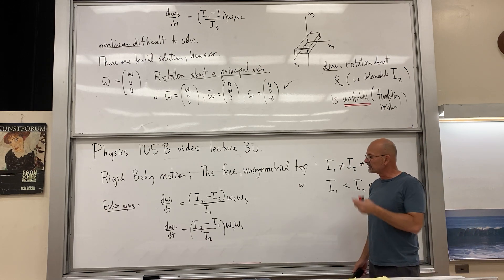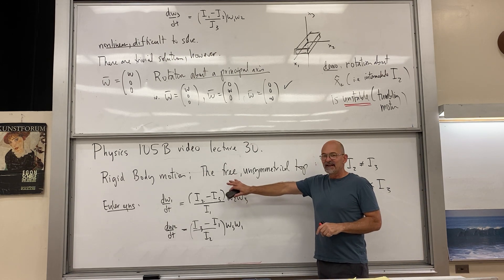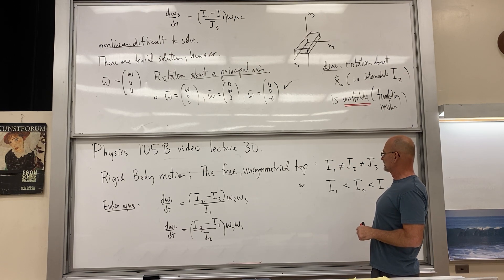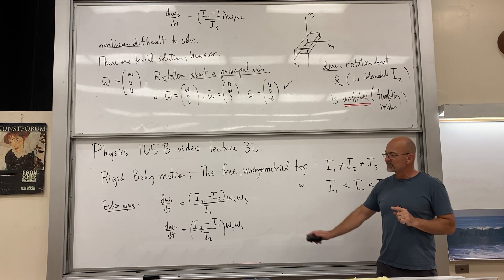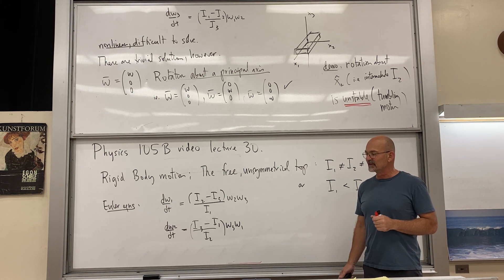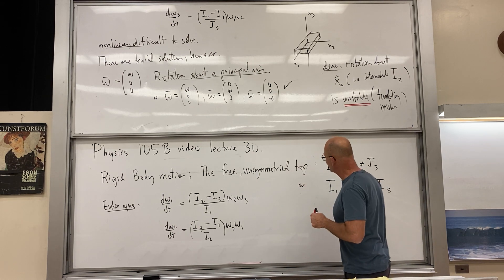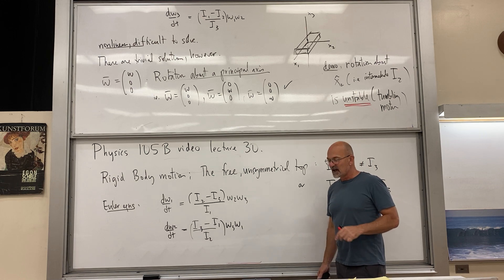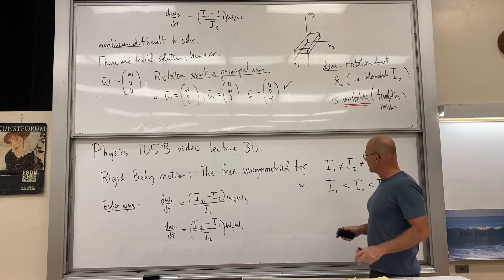Engineers have to know this. If you're designing a rotating satellite that you're going to put in orbit, and you try to get it to rotate about an intermediate axis, it's going to tumble — it won't be stable. Because this is an important phenomenon throughout physics, I'm going to give a discussion of the theory of linear instability in a general sense, and then we'll return to these Euler equations and see that they are a perfect example of a nonlinear system showing a dynamic instability.